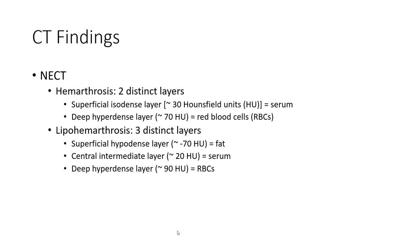CT findings. Hemarthrosis shows two distinguished layers: a superficial isodense layer representing serum, and a deep hyperdense layer representing red blood cells. Lipohemarthrosis shows three distinct layers: a superficial hypodense layer with fat, a central intermediate layer with serum, and a deep hyperdense layer with red blood cells.